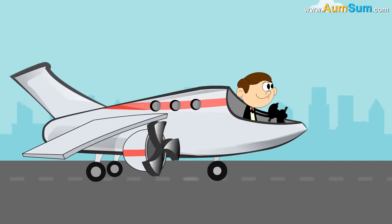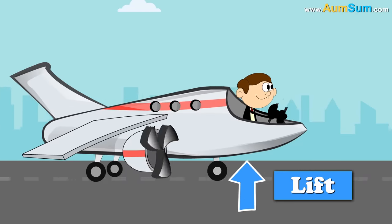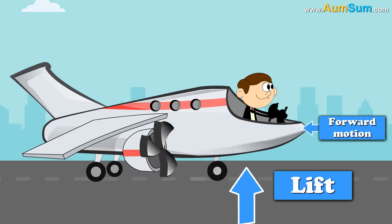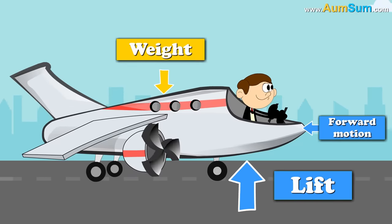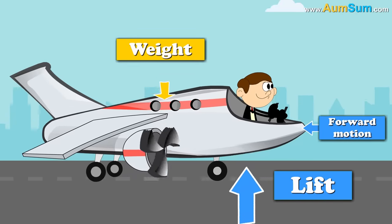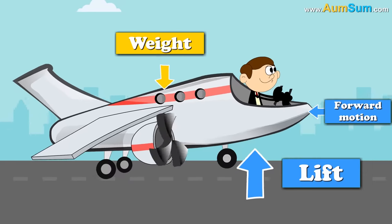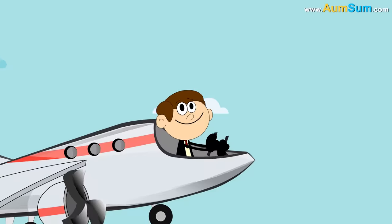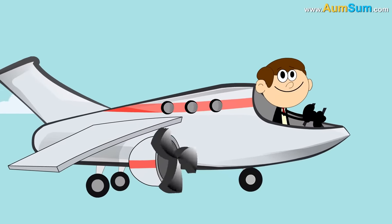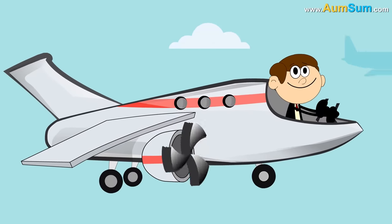Also, when the force of lift produced due to forward motion is greater than the force of weight produced due to gravity, the airplane moves upward. In simple terms, this is how an airplane flies.